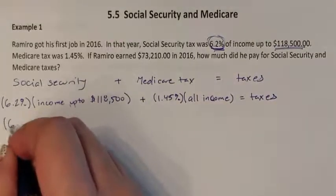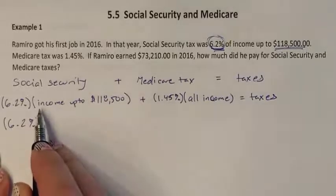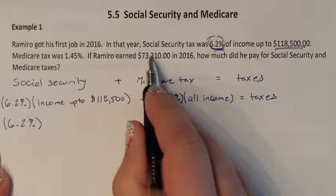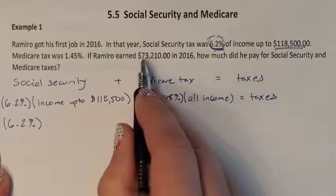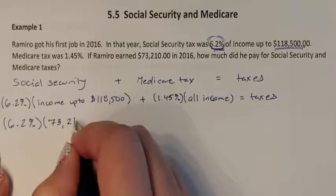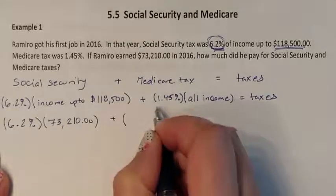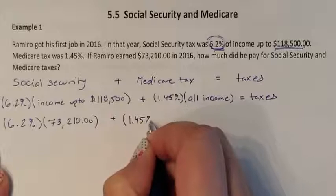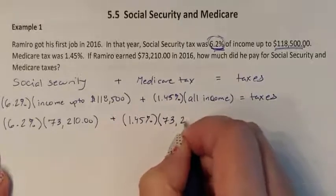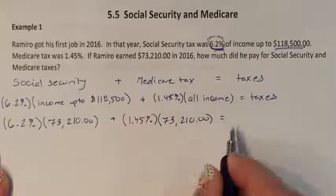We have 6.2% multiplied by income up to $118,500. Since Ramiro has not reached that ceiling, he pays on his entire income. We add that to 1.45% for Medicare, which is always based on your entire income. Here is his full income, and this gives us his total taxes.